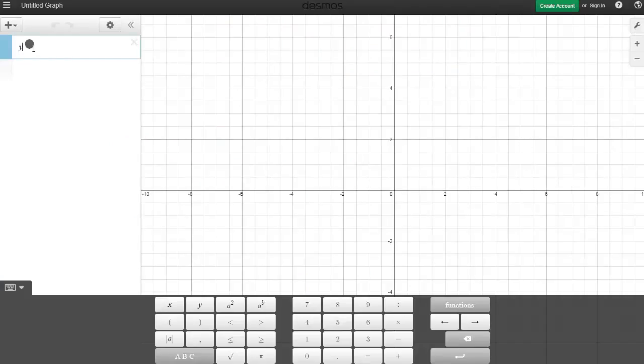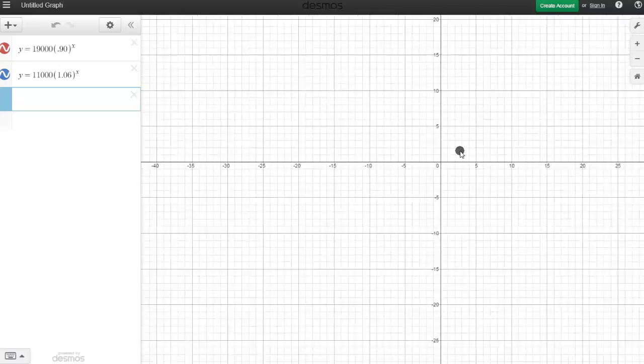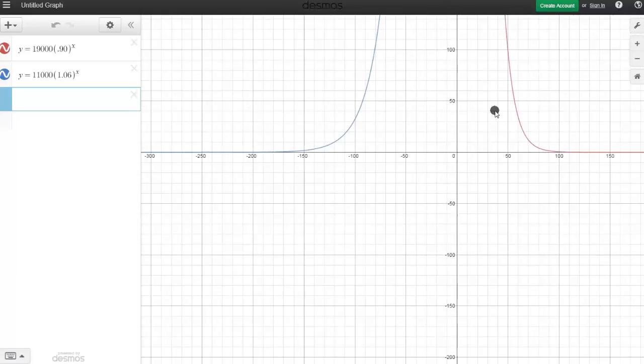Now I'm going to graph both my equations. So we have y equals 19,000. Our base is going to be 0.90, and then we're raising that to the x power. Our next equation is y equals 11,000, and then the base is going to be 1.06 raised to the x power. Now as you can see on our graph right here, nothing showed up. And that's just because we're working with some huge numbers right here. So you'd have to zoom out really far to actually see the graph. So if I do that, zooming out a bunch of times, there you go. So you see a couple of the curves there.